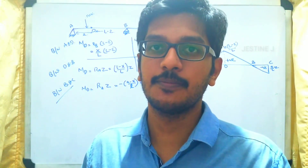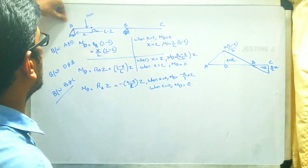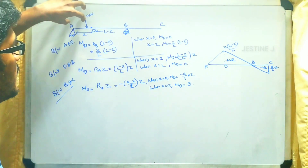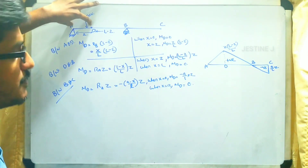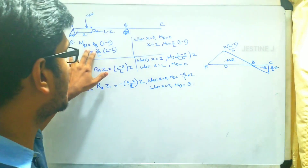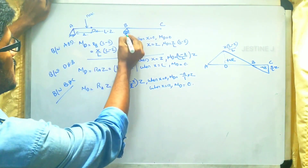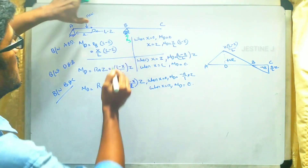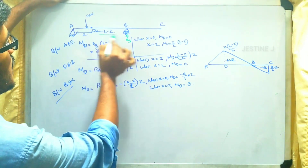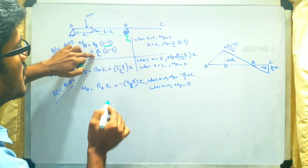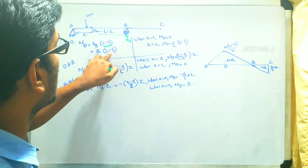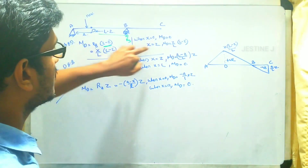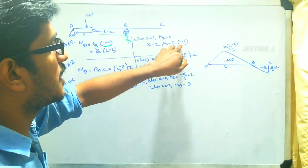We will now draw the bending moment diagram at point D. As the 1 kN moves from A to C, when the load is between A and D, MD equals RB multiplied by (L minus Z). Substituting RB equals x/L gives MD equals x/L multiplied by (L minus Z). When x equals 0, MD equals 0, and when x equals Z, MD equals Z/L multiplied by (L minus Z).